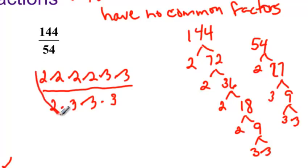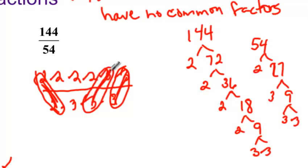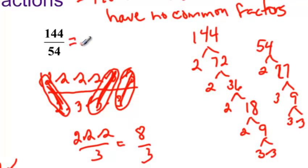Now we're looking for common factors top and bottom. Those cancel each other out. This 3 will cancel out that 3. A factor of 1 so that we can factor it out. And that 3 will cancel out that 3. We have 2 times 2 times 2 over 3, or 8 over 3. So 144 over 54 is 8 over 3.